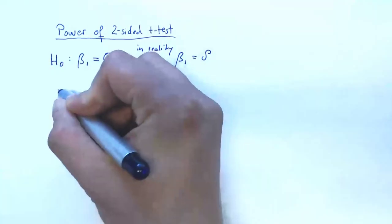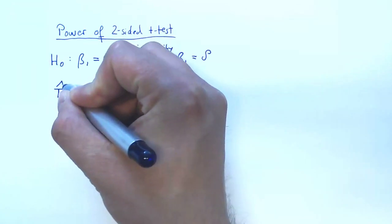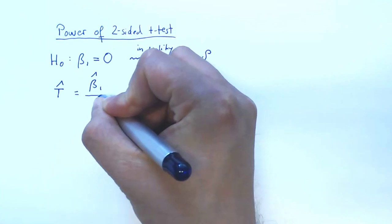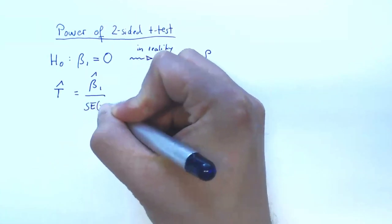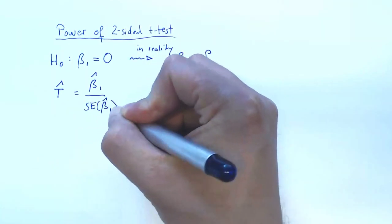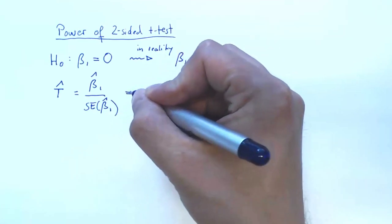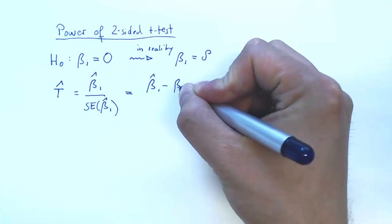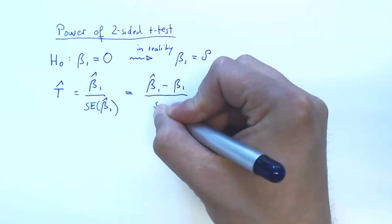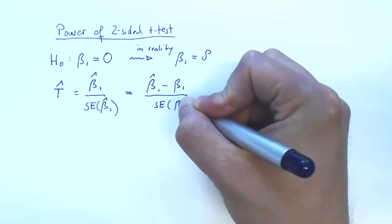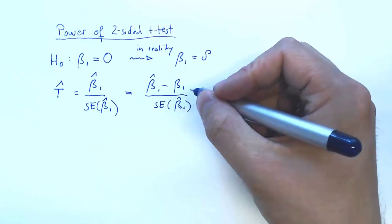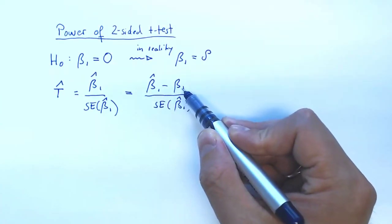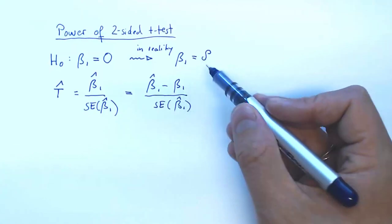We're using our t statistic. And we can just rewrite this like so. So here I've subtracted minus beta 1. So now I have to add it again and beta 1 is equal to delta.